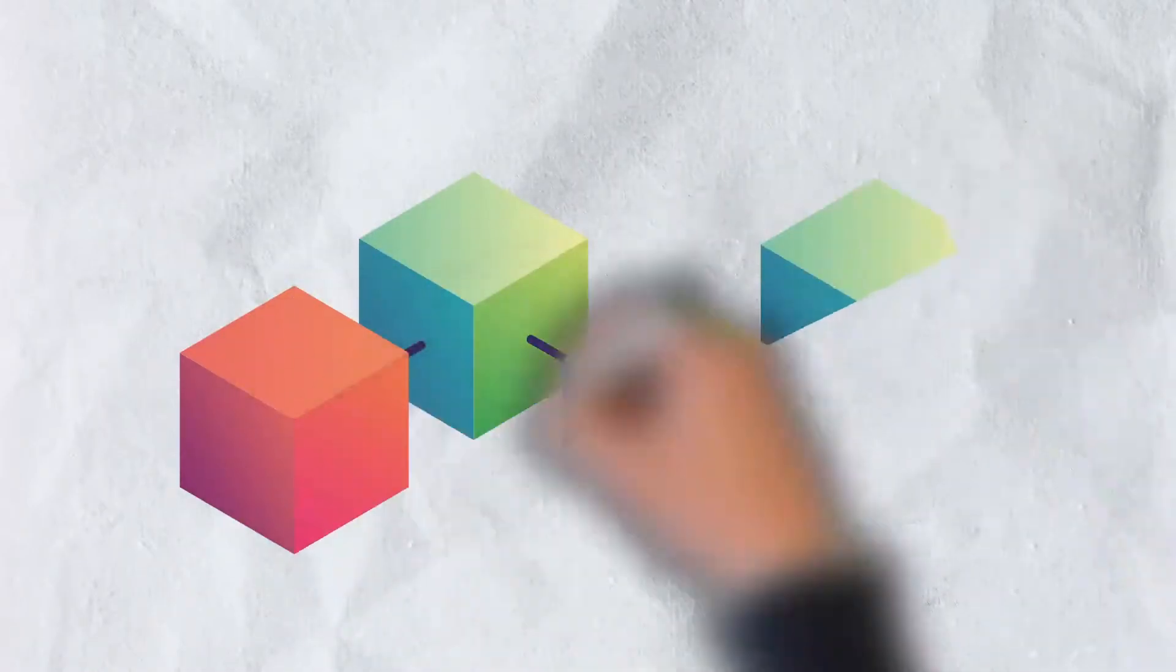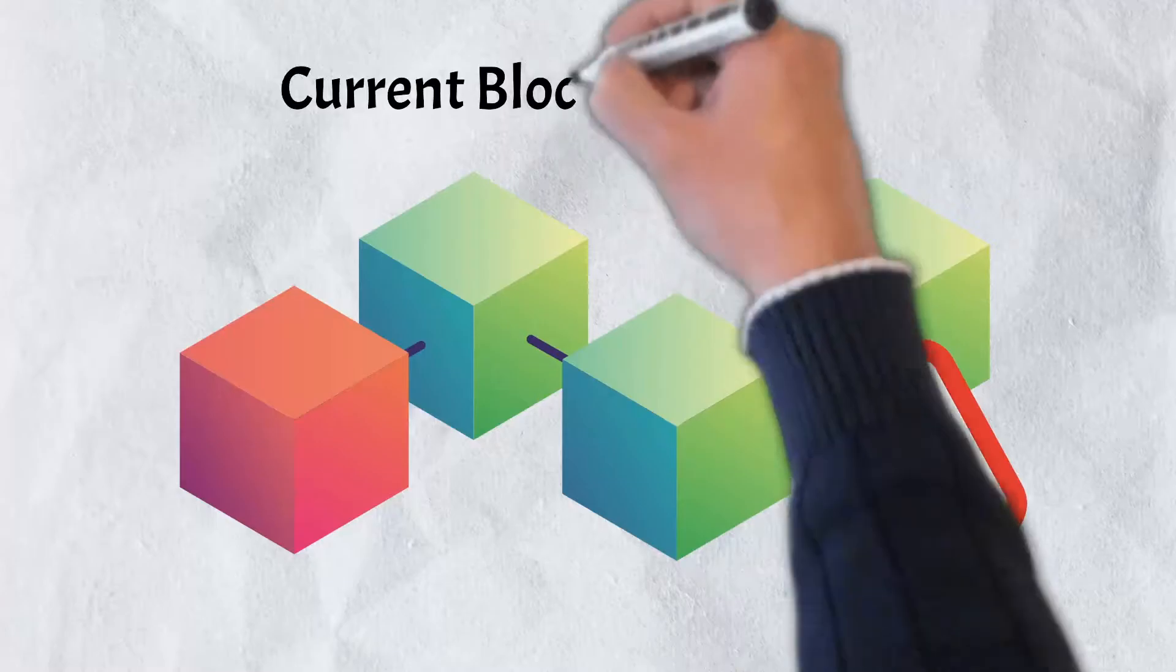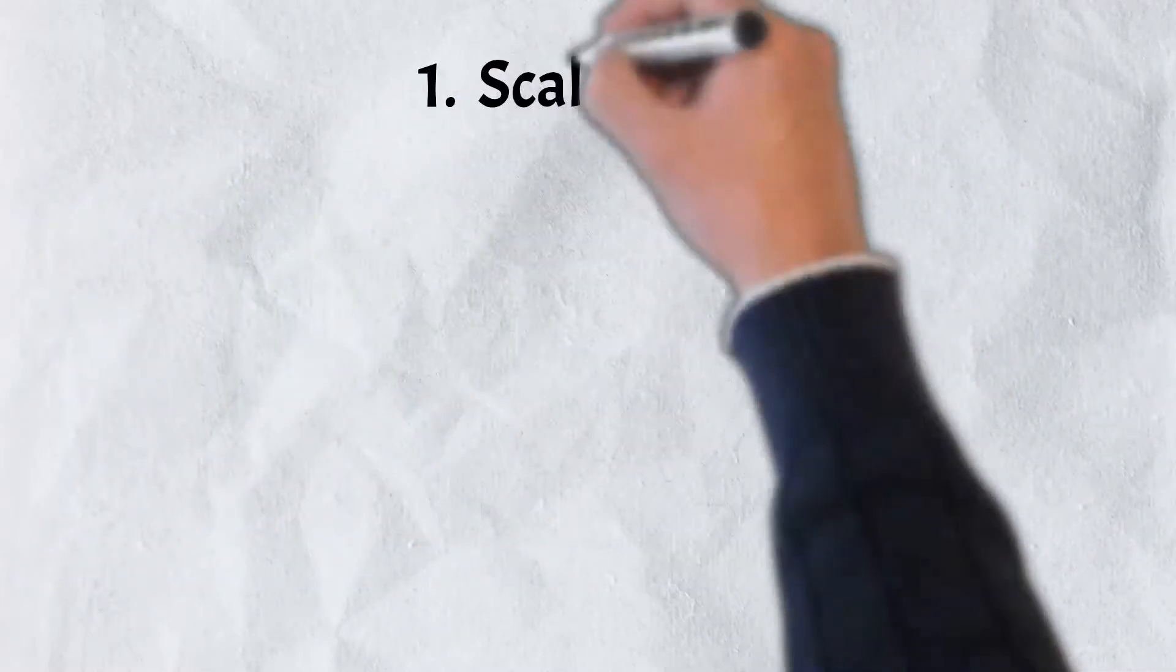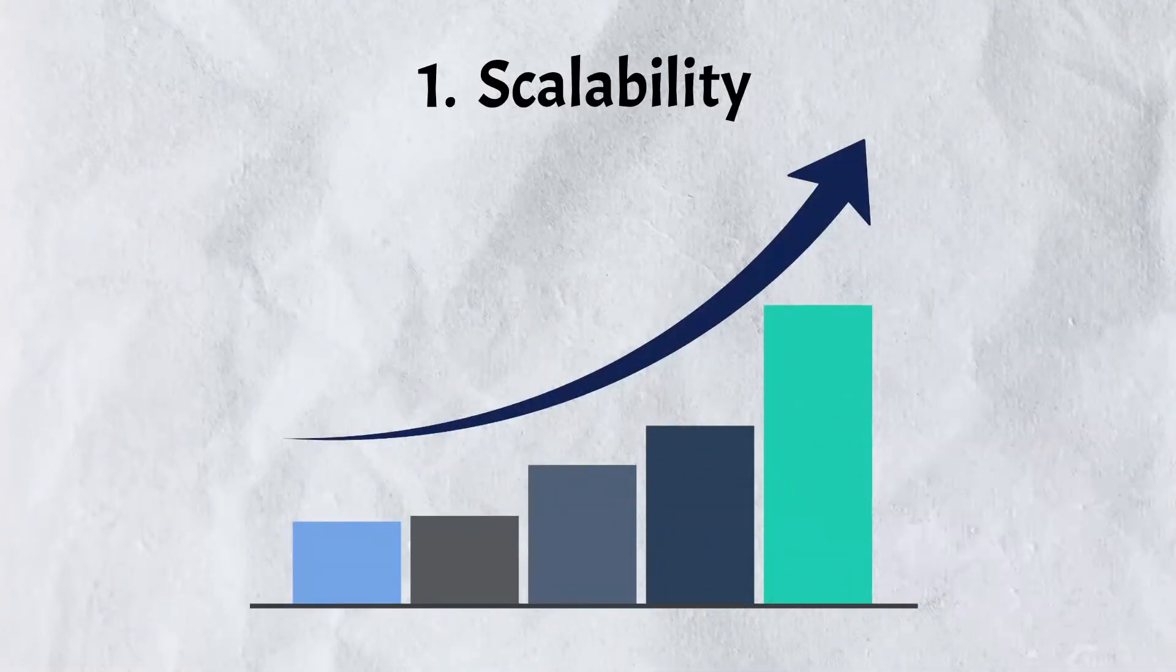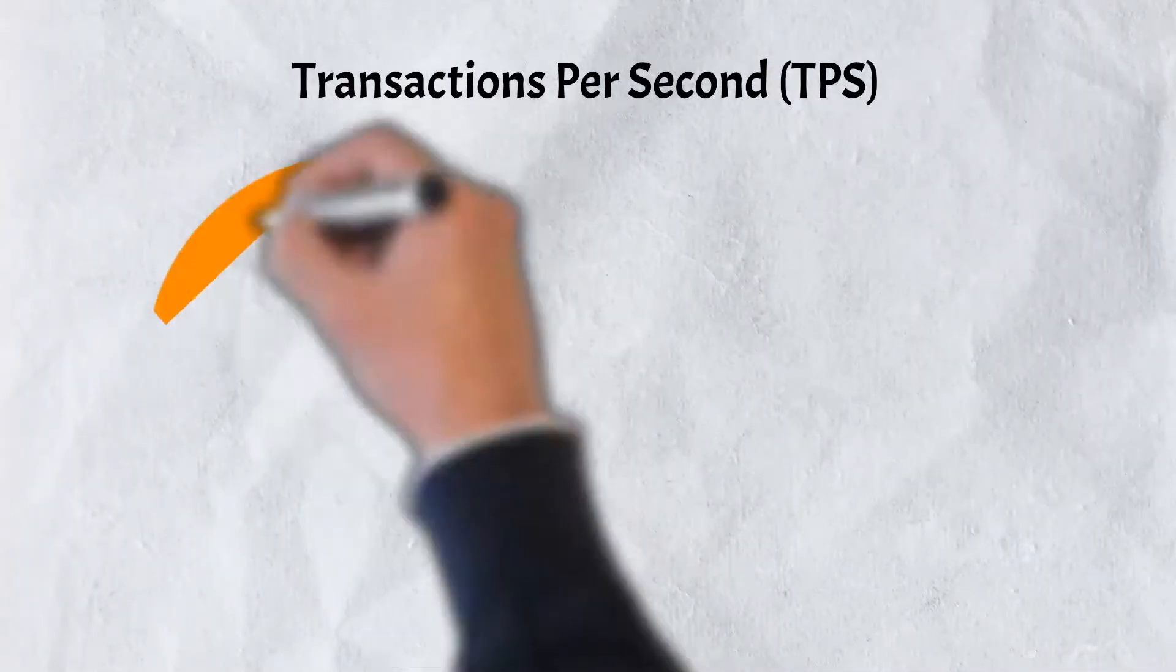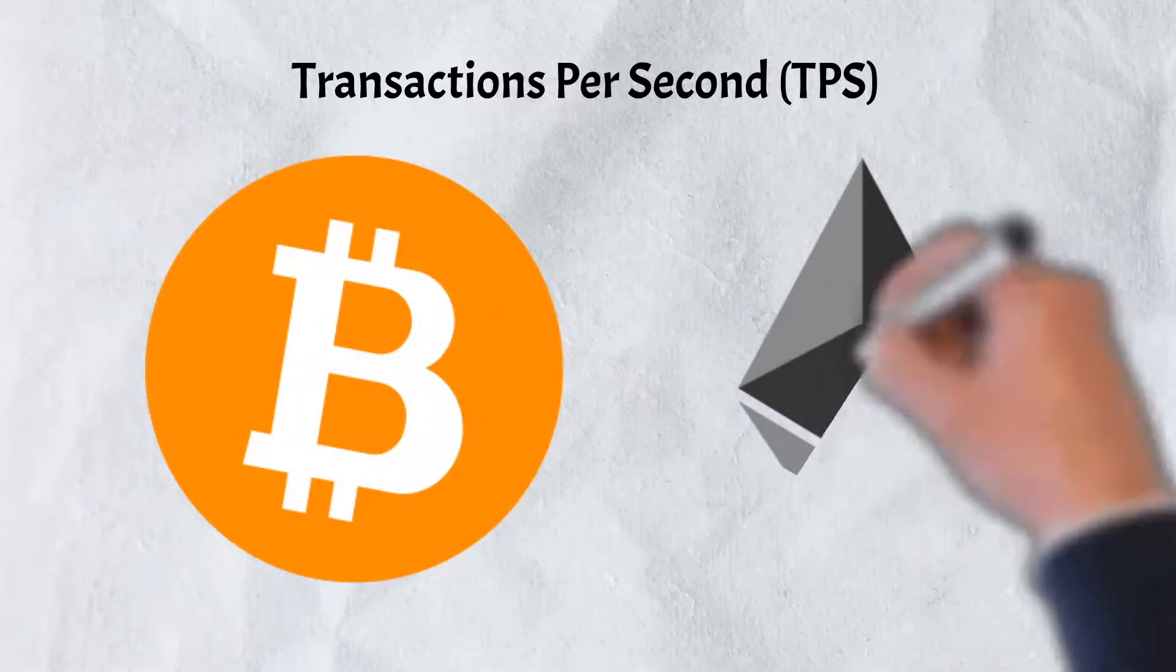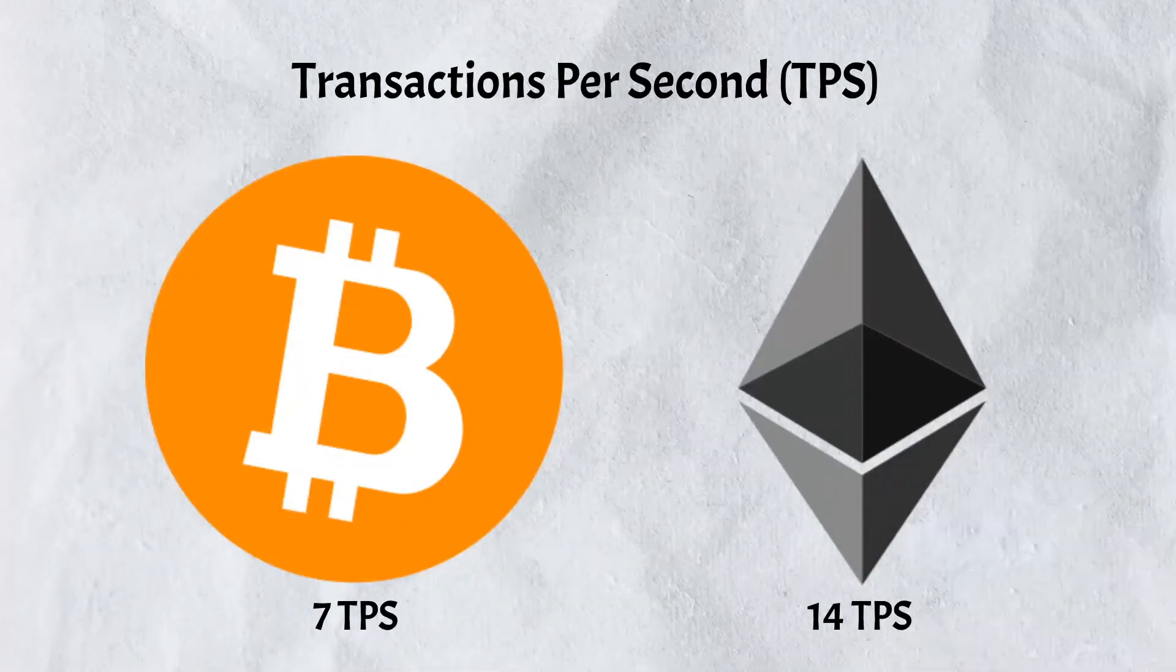In order to understand the solutions that Cosmos aims to offer, it's important to first understand the problems that exist with today's blockchains. Number one: Scalability. Scalability is the ability of blockchains to process a large number of transactions at any given time. For all their popularity, Bitcoin and Ethereum aren't very fast. Bitcoin can process about 7 transactions per second before it starts having issues. For Ethereum, that number is about 14.